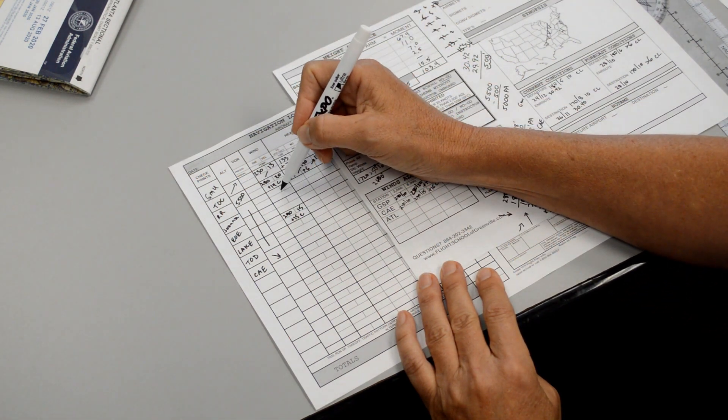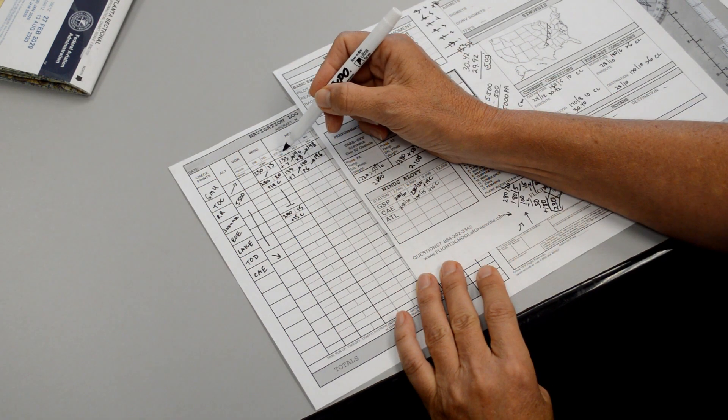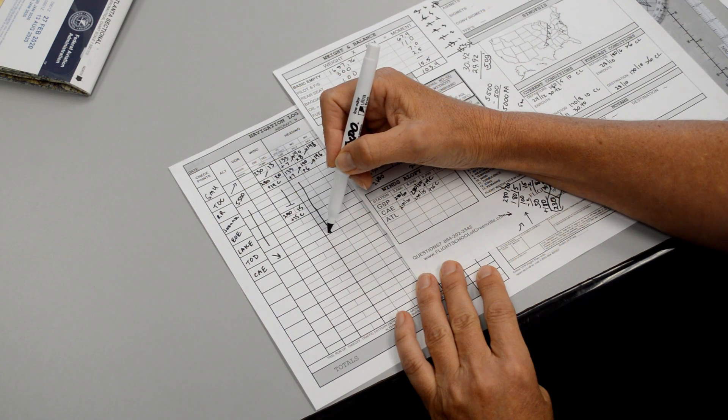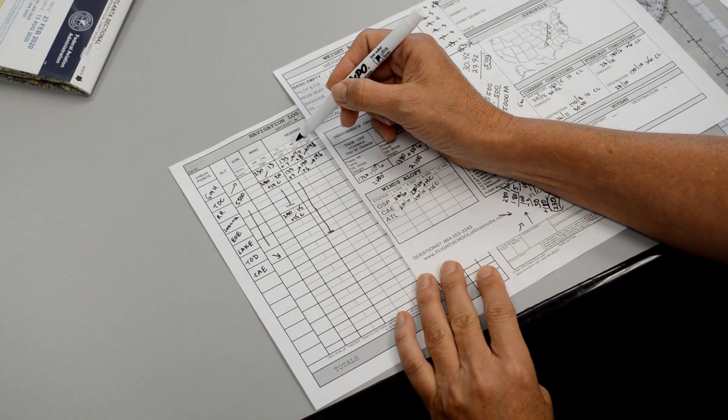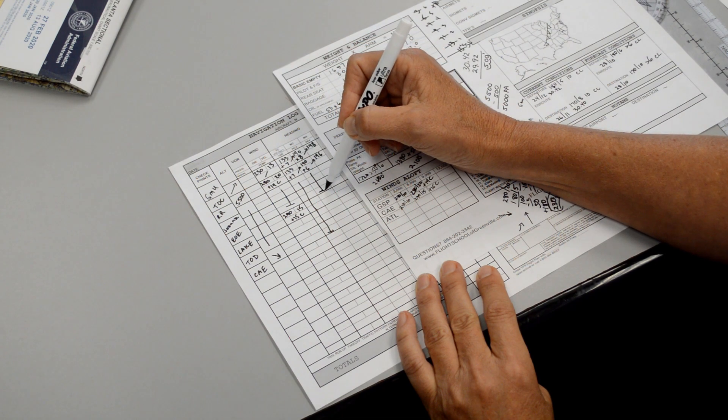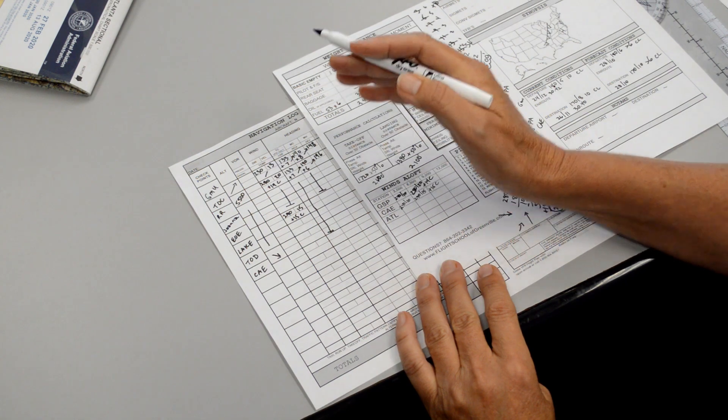So all of these are going to be the same until this point. The true course and the variance remain the same throughout the entire flight, and so therefore the magnetic course is the same. But the wind correction angle will have to recalculate for the second half of our journey since the winds changed just a little bit.